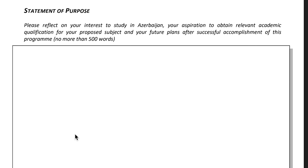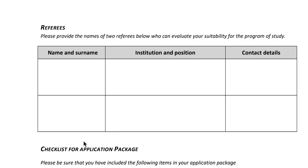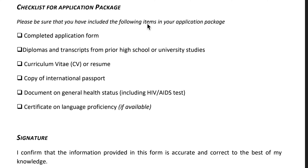Next is the statement of purpose. Write your interest in studying in Azerbaijan, your aspiration to obtain the relevant academic qualification for your proposed subject, and your future plans after successful completion of the program — in no more than 500 words. Next are referees: provide the names of two referees who can evaluate your suitability for the program. You can give the name of your professor or teacher, along with their institution, position, and contact details.